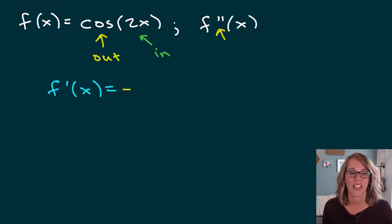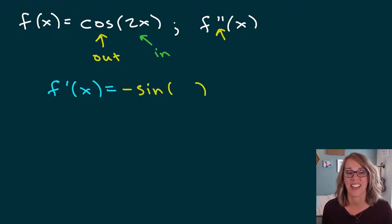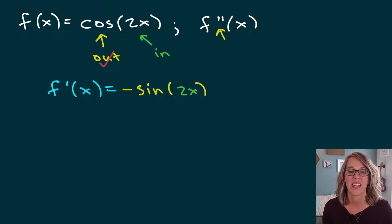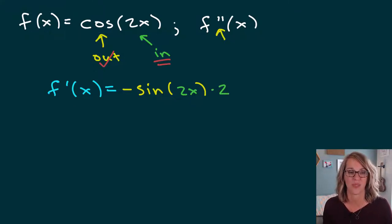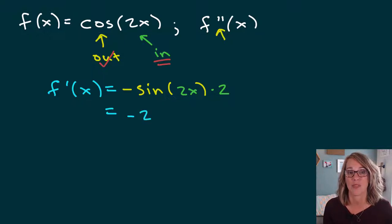The derivative of cosine is negative sine of whatever's on the inside. I'm keeping that 2x fixed, so I am done with the outer function cosine, and I'm on to my inner function. I'm going to multiply on the derivative of 2x. The derivative of 2x is just 2. I can rewrite this in a nicer order — putting the 2 out in front: negative 2, and then I've got the sine of 2x.